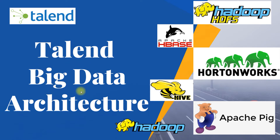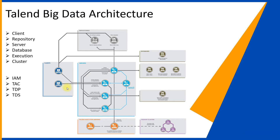In this video we'll be discussing the Talend Big Data architecture. It contains six different components: the client, the repository, a server, databases, an execution server, and the external Hadoop cluster. The main difference between a DI versus Big Data architecture is the introduction of the Hadoop cluster. This can be Hortonworks, Cloudera, or any other custom distribution — Talend has connectivity for all such distributions. This is the extra component in the Talend Big Data architecture.